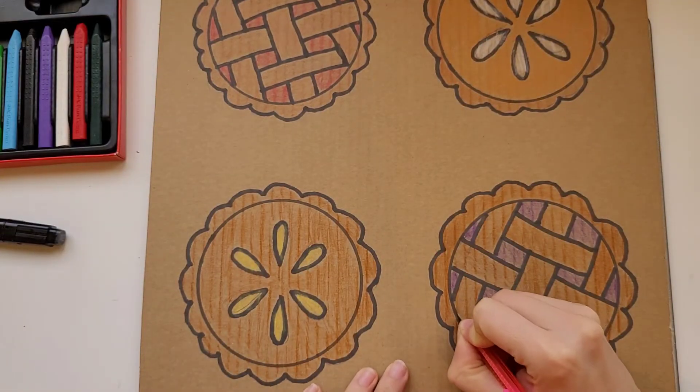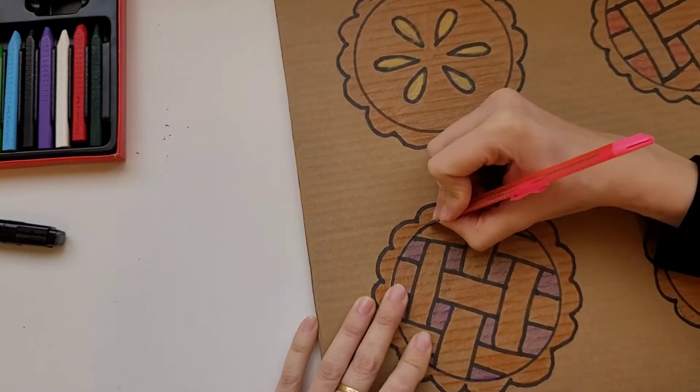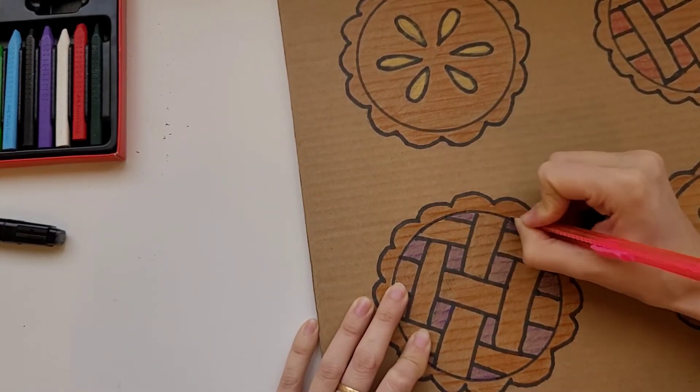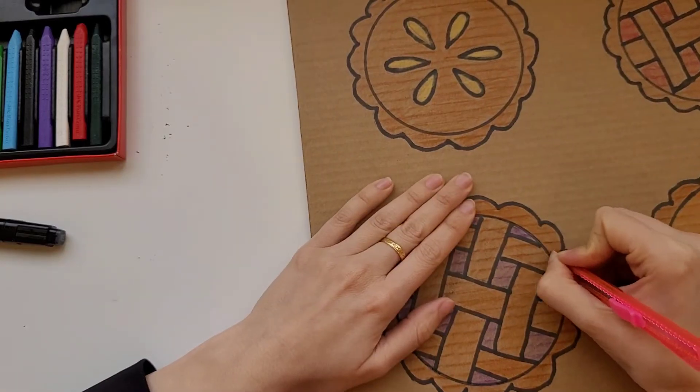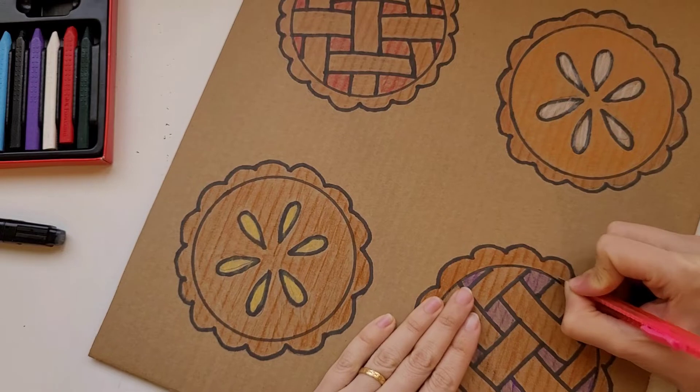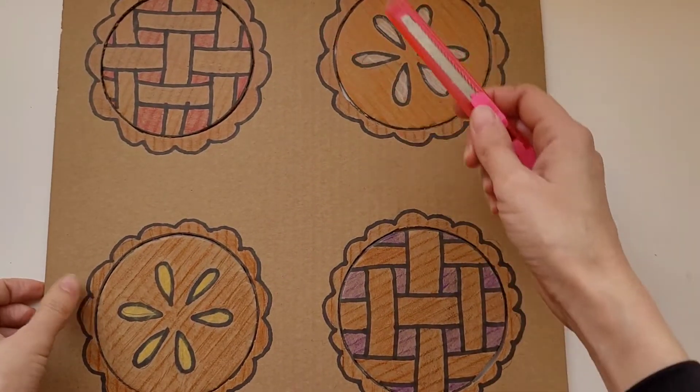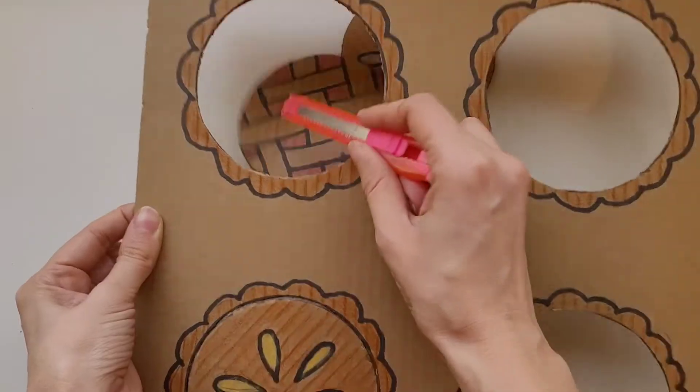After we're done coloring all the pies, we're going to use a cutter to cut out the inner circle while leaving the outside part intact. We're going to cut out all four pies.